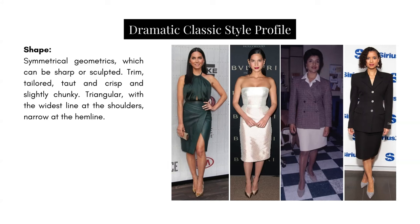You want to avoid ornate, intricate, or delicate shapes. Here we have Olivia Munn and Diane Kruger in very delicate, rounded shapes that feel like a costume on both these women. These are for people with a lot more rounded edging and a more youthful essence. For that reason, these dresses look very childish on them — they don't mesh with the grown-up, elevated, polished requirement of the classic type.